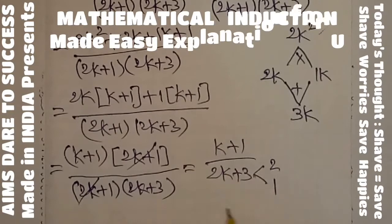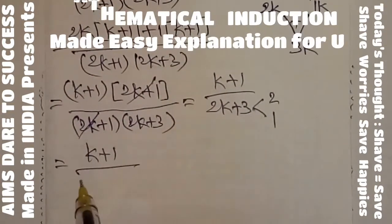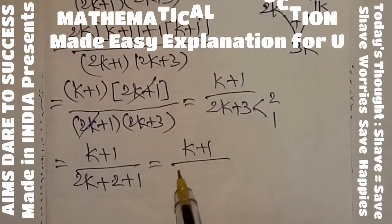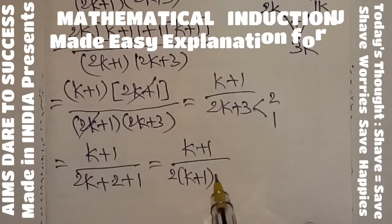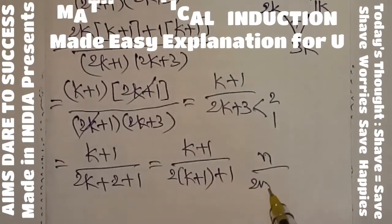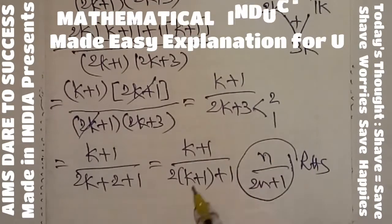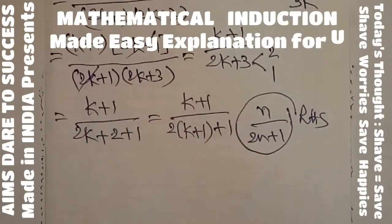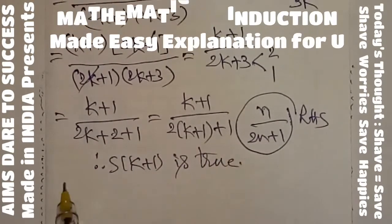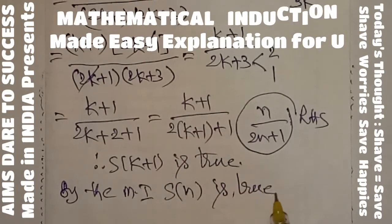Here 2k+3 can be written as 2(k+1)+1. So the result is (k+1)/(2(k+1)+1), which matches the RHS form n/(2n+1) with n = k+1. Therefore S(k+1) is true. So by mathematical induction, the given statement is true for all n.